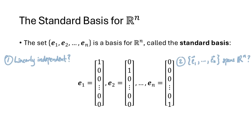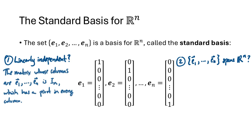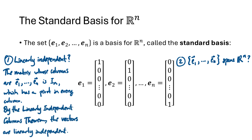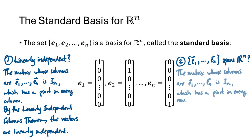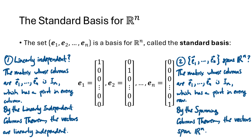So why is this a basis? The definition says that this set must be linearly independent, and the set must span R^n. If we form the matrix that has these vectors as its columns, that matrix is I_n, the n by n identity matrix. That matrix has a pivot in every column, and so by the linearly independent columns theorem, those vectors are linearly independent. Similarly, since I_n has a pivot in every row, by the spanning columns theorem, these vectors span R^n.